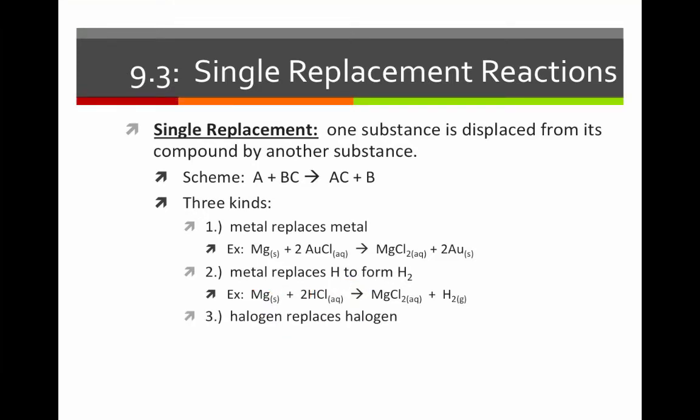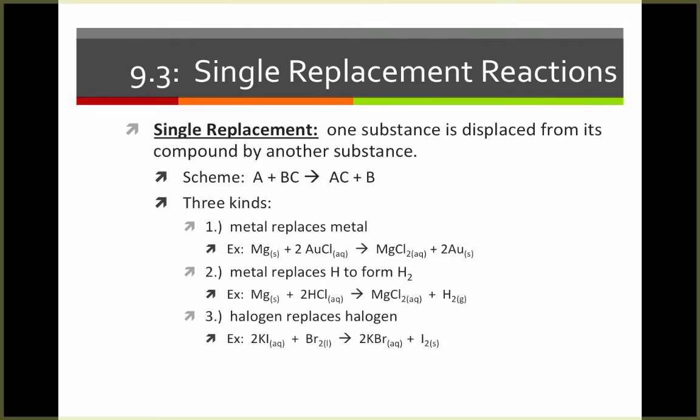Or we can have a halogen replacing a halogen. Recall that the halogens are group 7 or group 17 of the periodic table. For example, in this case, our halogen, bromine, replaces iodine and we end up with KBr and I2.